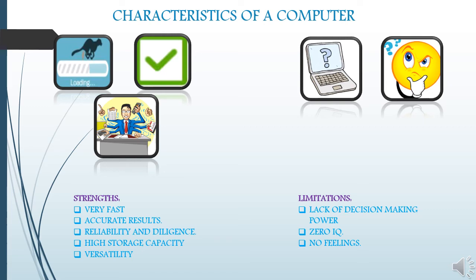Under the characteristics of computers, there are some limitations too. The first one is lack of decision making. The computer cannot think and take decisions on its own. They have to be programmed according to the need by us. Zero IQ: computers are machines and have zero IQ. They can only perform tasks according to the instructions given to them and cannot make a change by themselves if required.